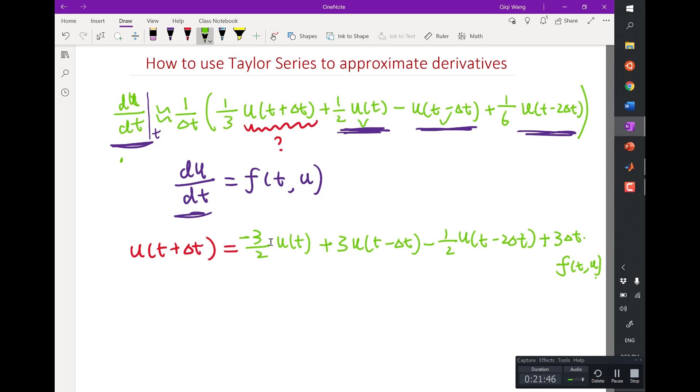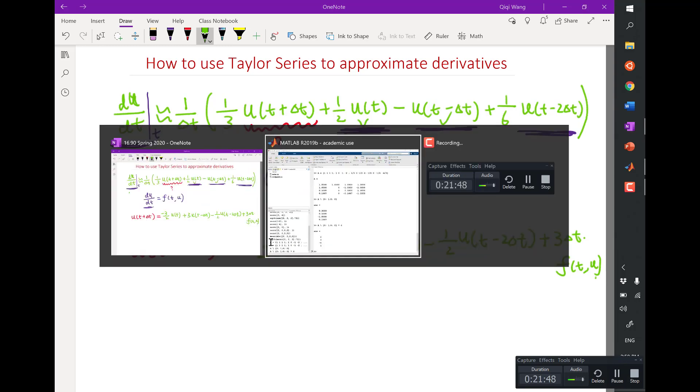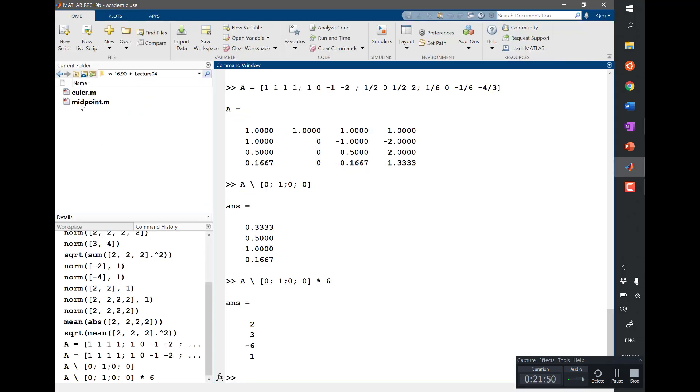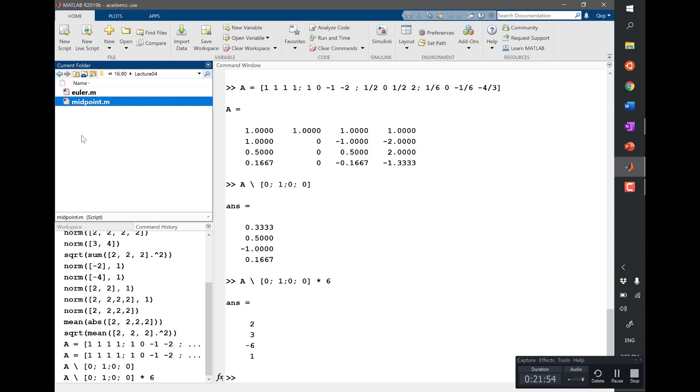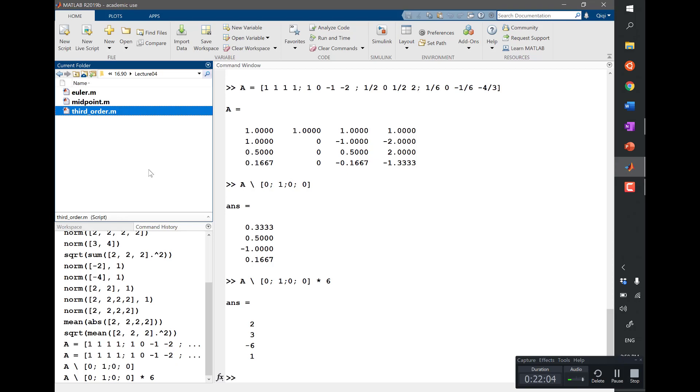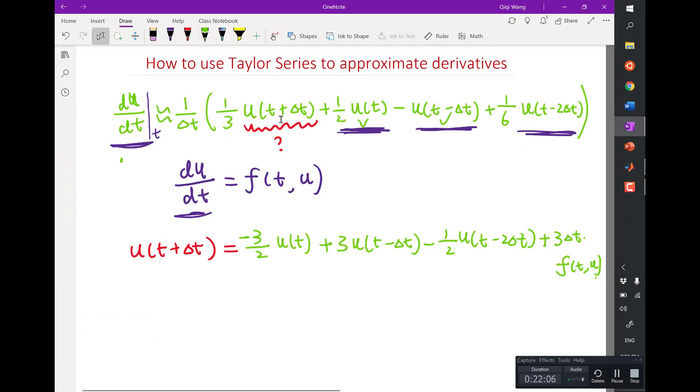Okay, so now let's try it out in MATLAB. Remember, last time we have been trying to use different schemes to solve the equation that's a proof of Euler's formula. So let's try a third order scheme that we just derived. According to Taylor series analysis, we are going to get at least a third order scheme.